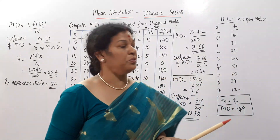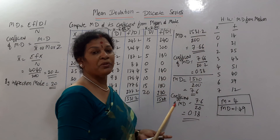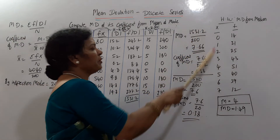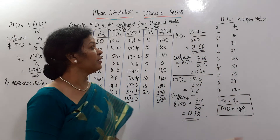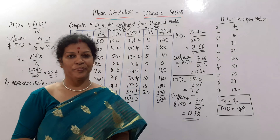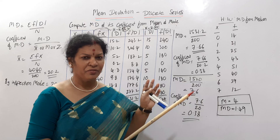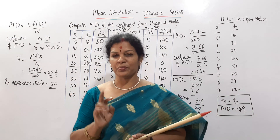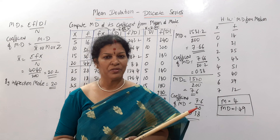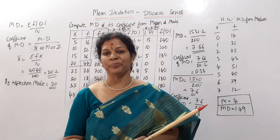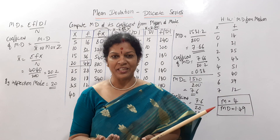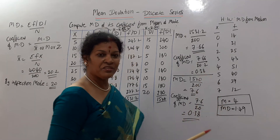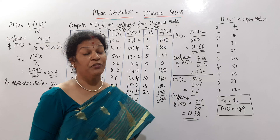For homework: x and frequency are given — calculate mean deviation from median. Remember, to calculate median in discrete series, first compute cumulative frequency (cf), then use the formula: size of (n+1)/2 th item to get median. Then find mod d, then f into mod d, and apply the formula. The answers are: median = 4, mean deviation = 1.49.